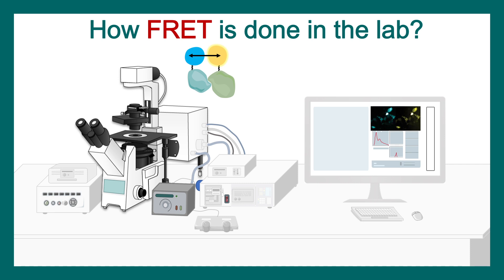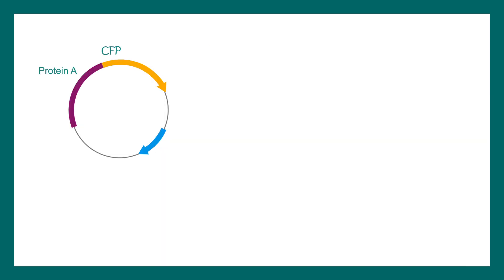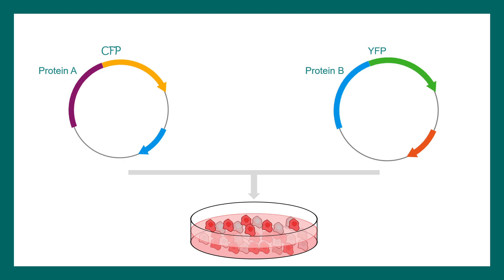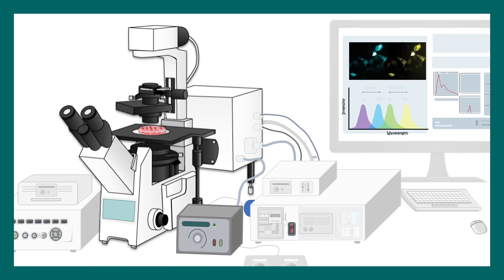Now the question is, how do we perform FRET in a laboratory setting? In order to do FRET, we need a microscope. Obviously, it can be done in a confocal microscope with the attachment of specific filters, specific for the donor and acceptor pairs. Before that, we need to express these donor and acceptor pairs in the cell. Let's say we want to determine the interaction between protein A and protein B. We have to express protein A coupled with CFP and protein B coupled with YFP, and then transfect these two plasmids into cells. We'll be using these cells for our further analysis.